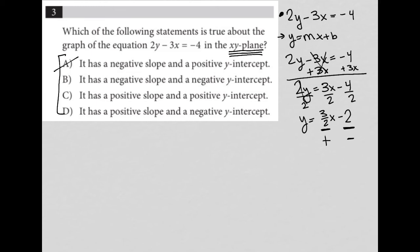Choice B says it has a negative slope. Well, no, my slope is positive. So B is out. Choice C says it has a positive slope. Well, that's true. And a positive y-intercept. Well, that part is not true because my y-intercept is negative. So C is out.